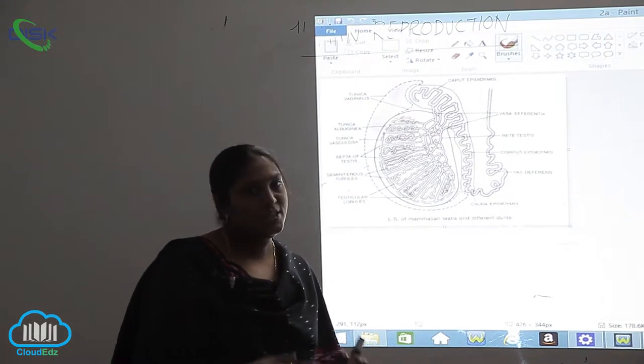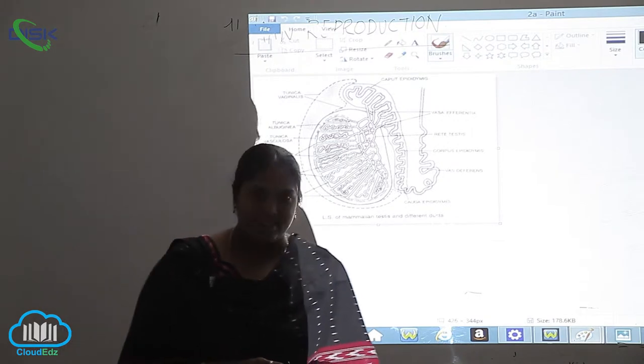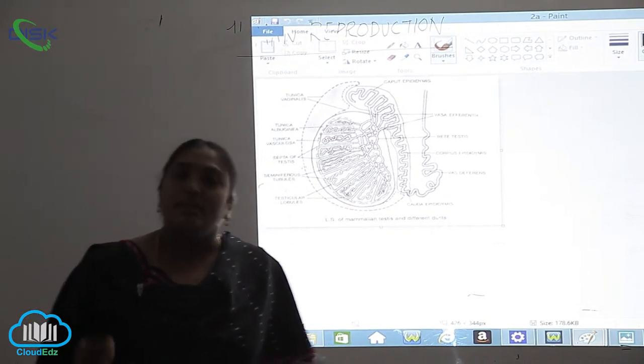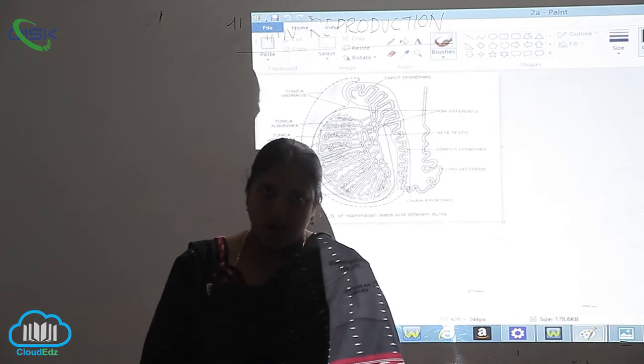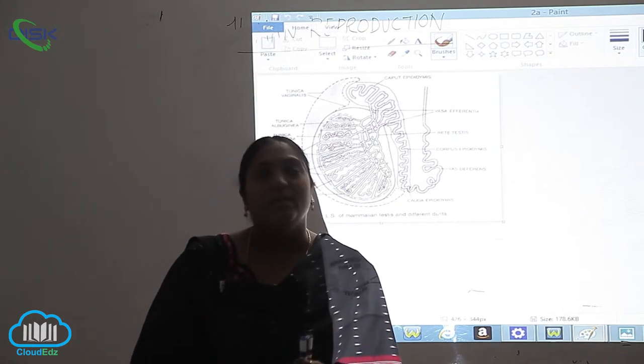In the structure of the scrotum and the different accessory glands, is it clear? I will repeat: the male accessory glands are, first, the seminal vesicles, which are paired, that is two in number.